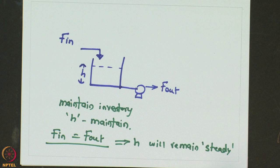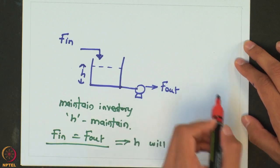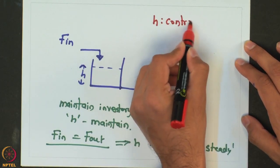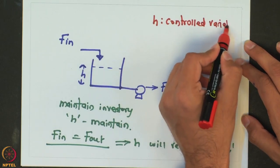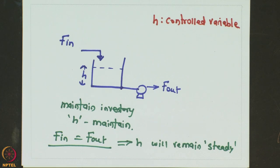Let us now look at the different terminologies or jargons of process control, so that it will help us communicate on the same ground. I will explain these terms using the same surge tank example considered earlier. For this example, the objective when you have a control system is to maintain the height inside the tank. The variable which we want to maintain, or which has to be maintained by the control system, is known as the controlled variable. In this case, the height or level inside the tank is the controlled variable.